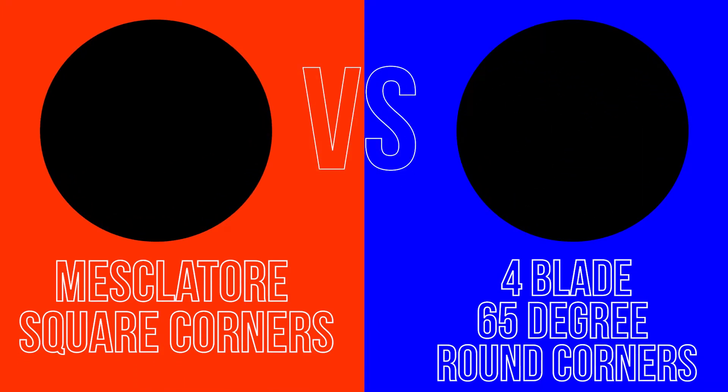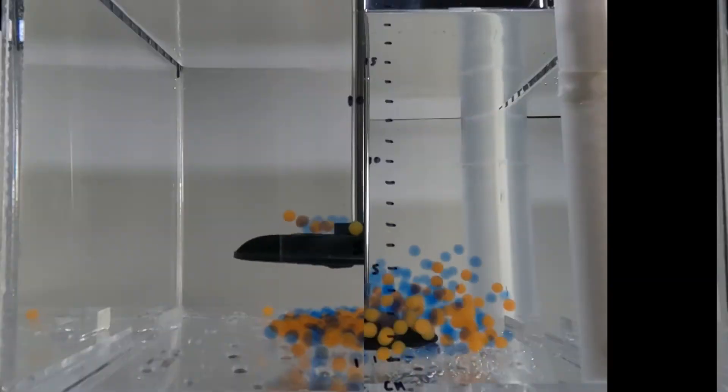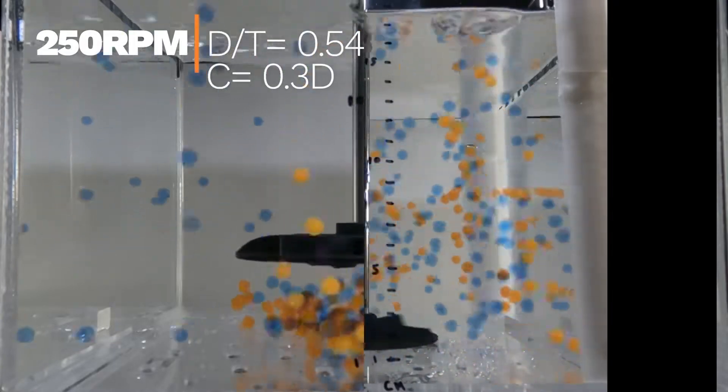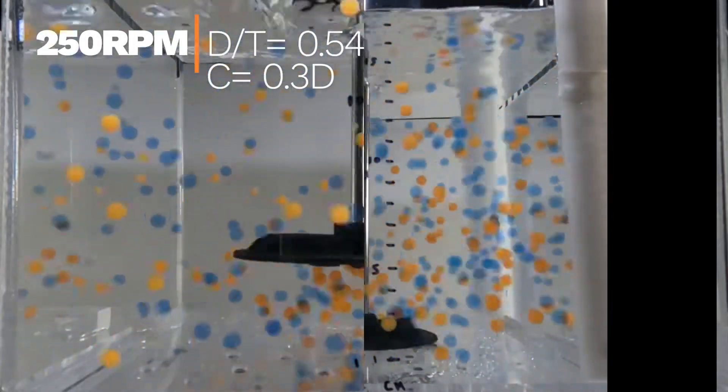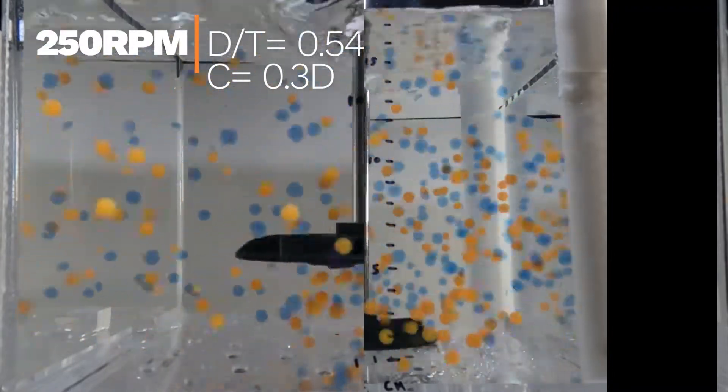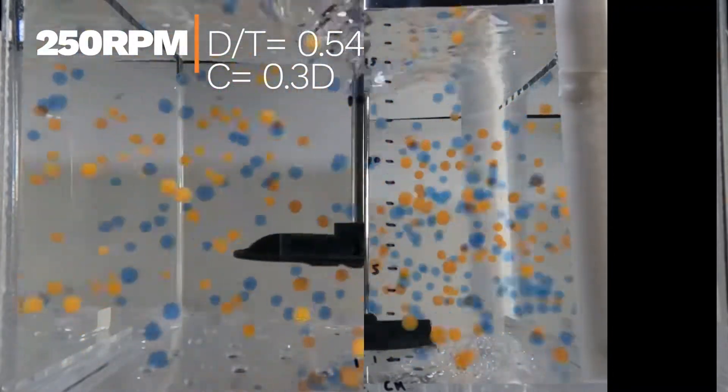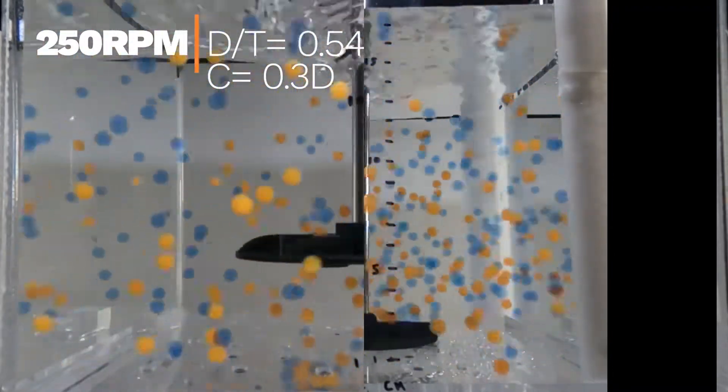Research with computational fluid dynamics and models like these helped us achieve this patent pending flow pattern. Notice how fast particles travel on the mescalator's agitator. Even at these speeds, shear is comparable to the 4 blade agitator.